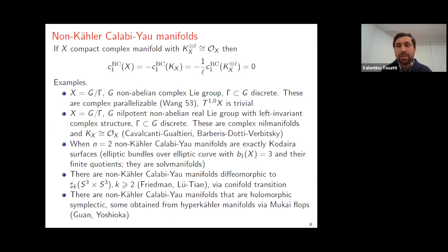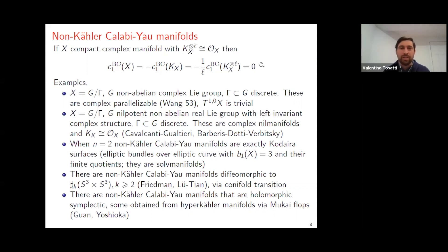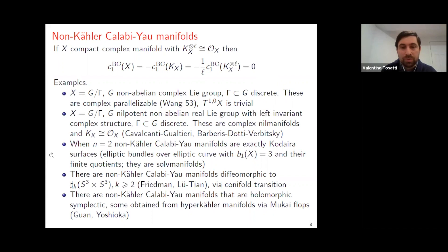There is a trivial observation: if you have a complex manifold, maybe not Kähler, with torsion canonical bundle, then it does have vanishing first Chern class, simply because the first Chern class of K_X to the power L is zero if K_X^L is trivial. So having a torsion canonical bundle implies vanishing first Chern class. And here are examples of non-Kähler complex manifolds with torsion or trivial canonical bundle. Possibly the first examples were considered by H.C. Wang in the 50s: quotients of a non-abelian complex Lie group G by a discrete subgroup Γ. These are complex parallelizable manifolds. When the group is non-abelian, these are non-Kähler, and they even have trivial holomorphic tangent bundle, so the canonical bundle is also trivial.